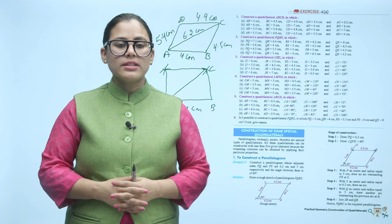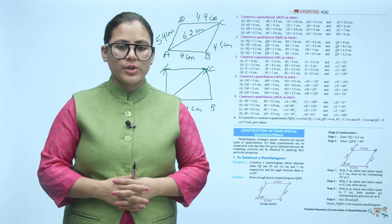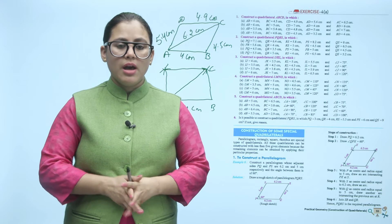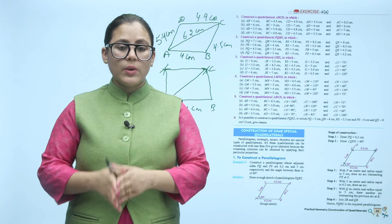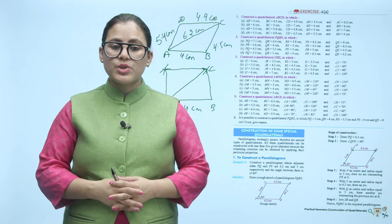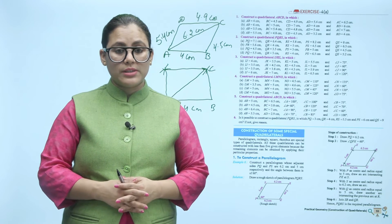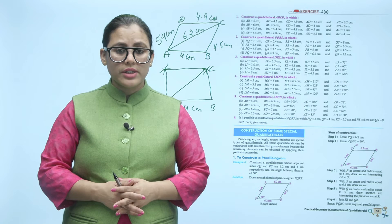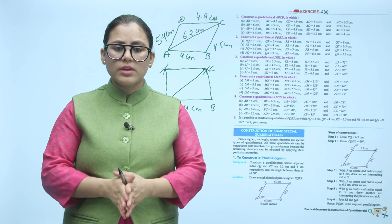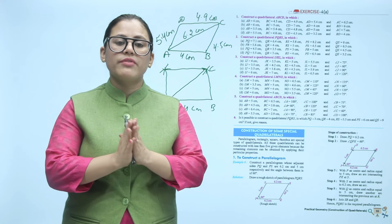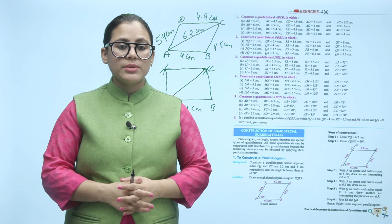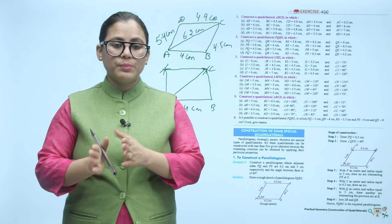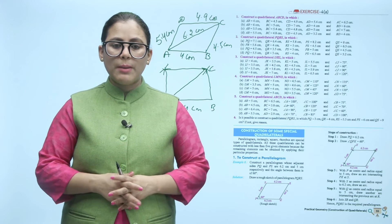Next is construction of some special quadrilaterals. Parallelogram, rectangle, square, and rhombus are special types of quadrilaterals. All these can be constructed with fewer than five given elements, because the remaining elements can be obtained by applying their particular properties.